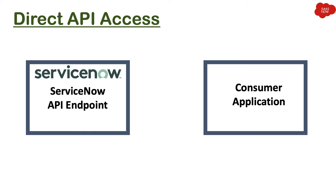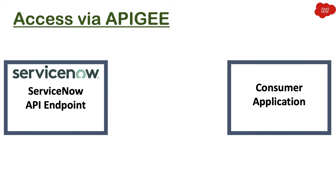Let's talk about direct API access first. You have a ServiceNow application and you have your consumer application. This consumer application can connect to ServiceNow if I provide the endpoint directly to the consumer — that means they can access and connect to the ServiceNow instance with that particular endpoint.